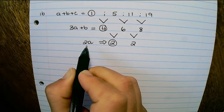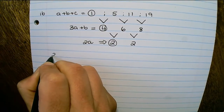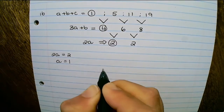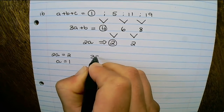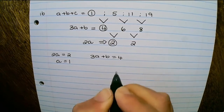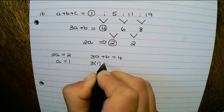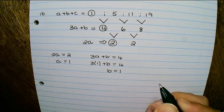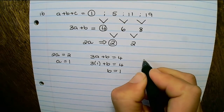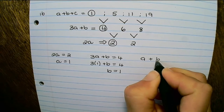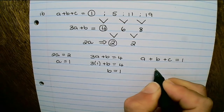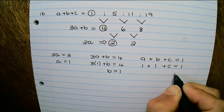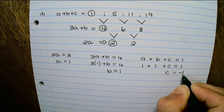Now I can solve for a, b, and c. From 2a equals 2, therefore a equals 1. Then 3a plus b equals 4 gives 3 times 1 plus b equals 4, therefore b equals 1. Then a plus b plus c equals 1, that is 1 plus 1 plus c equals 1, therefore c equals negative 1.